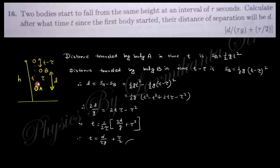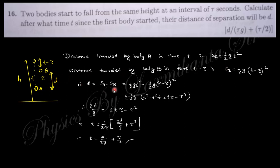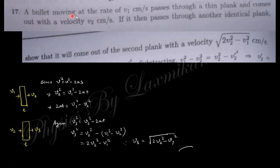The next question: two bodies start to fall from the same height at an interval of τ seconds. Find after what time t (from when the first body started) their separation will be d. Body A travels ½gt², and body B travels ½g(t−τ)². The separation is the difference of these two distances. Rearranging gives the value of t.